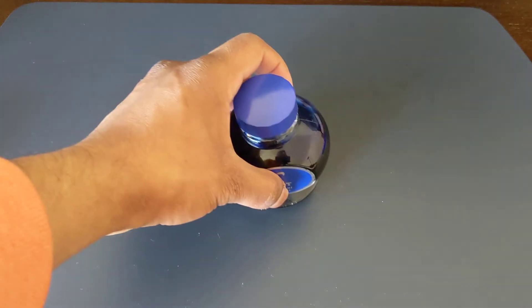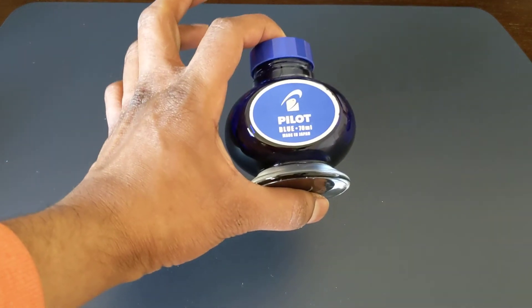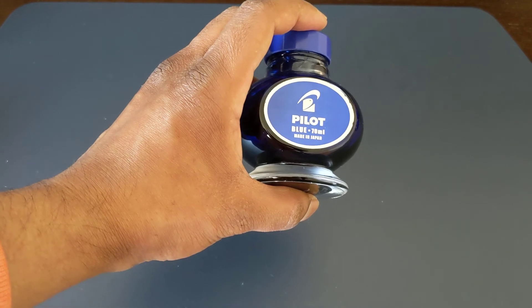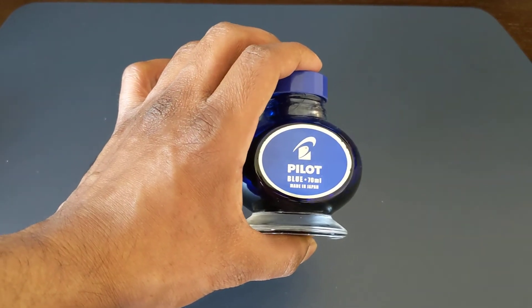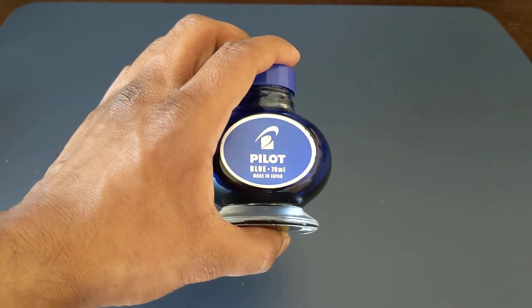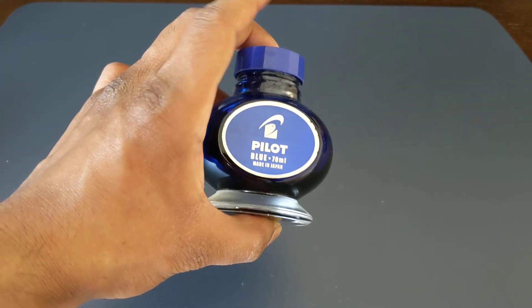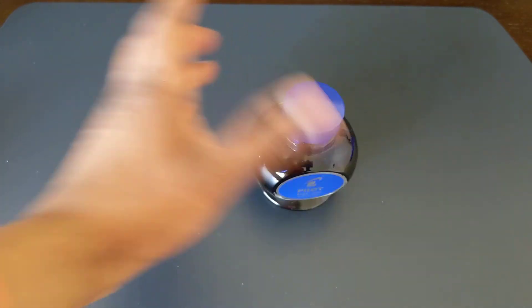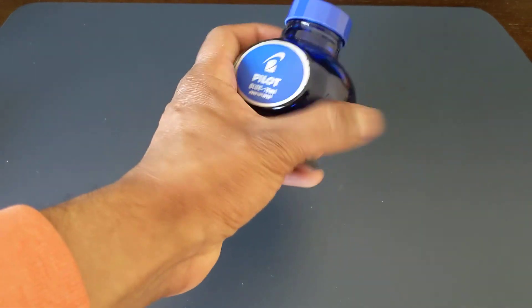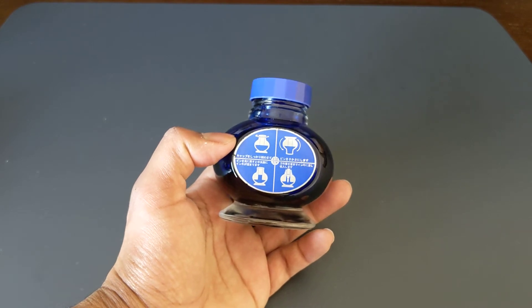The last ink bottle we're going to talk about today is the 70 milliliter Pilot bottle, which is when you consider the functionality and aesthetics probably my favorite. You can't actually buy this in the US. You can buy it from like JetPens or eBay, but Pilot USA does not bring it in for US authorized retailers. The main reason I like this is because it's just a very functional bottle. It's not too heavy, not very showy, and it also includes that insert like the Pilot 60 milliliter bottle also has.